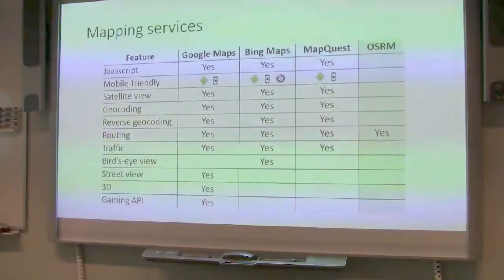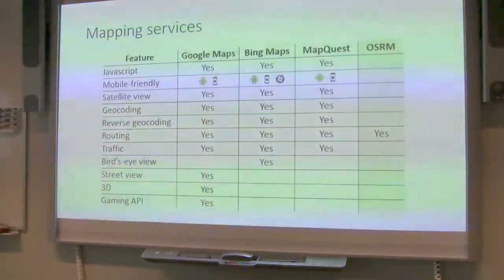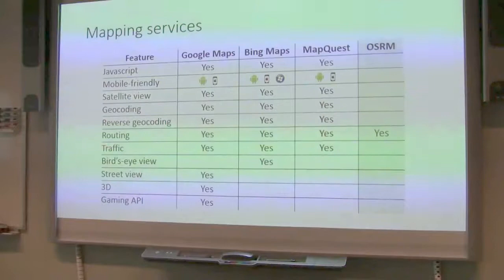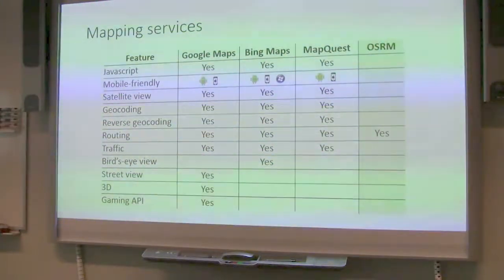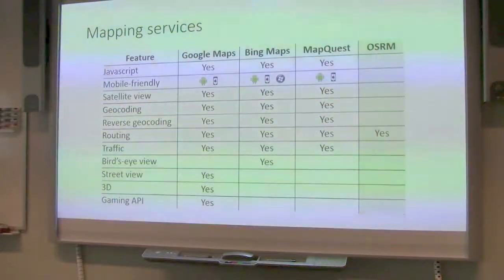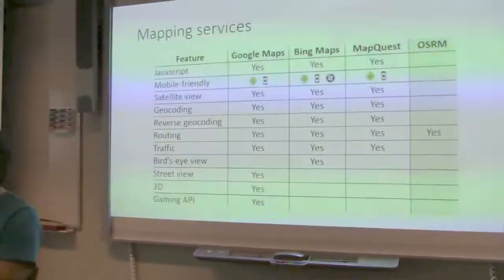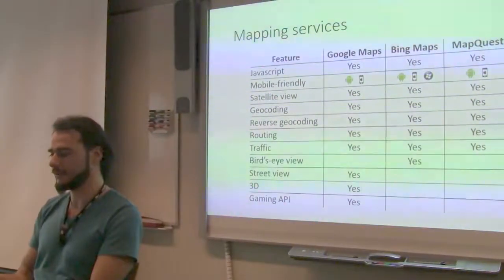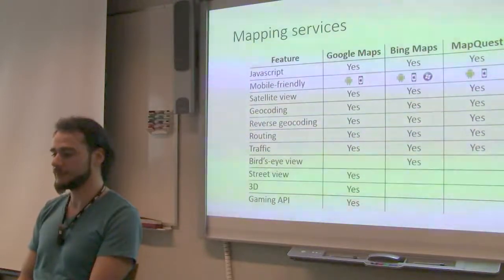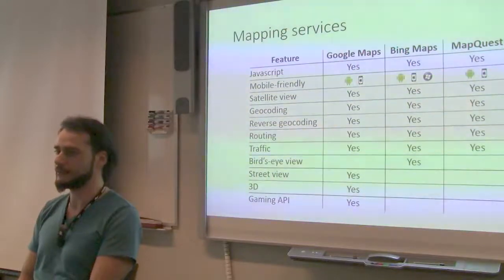MapQuest is also presented here because it gives you a little more freedom than the other services, and we will see what I mean about that a little later. OSRM, the last one on the list, is not really a mapping service — it's a routing service. It means that it gives you directions on how to find a place. It doesn't necessarily use a map, but it can be combined with any of the other map services, and you can get directions using it and plot the route on the map.